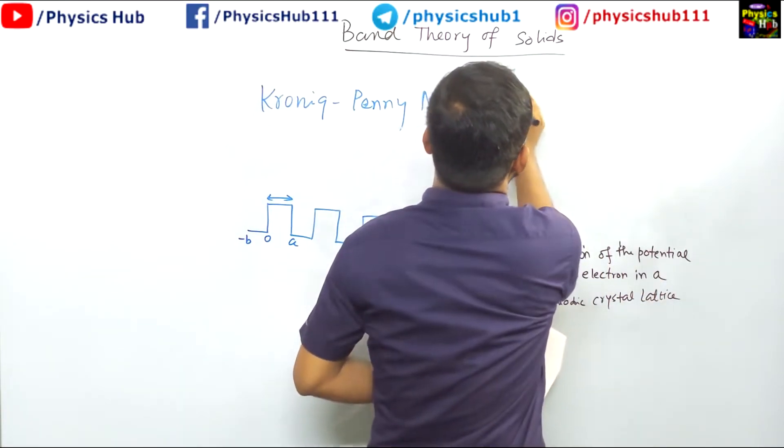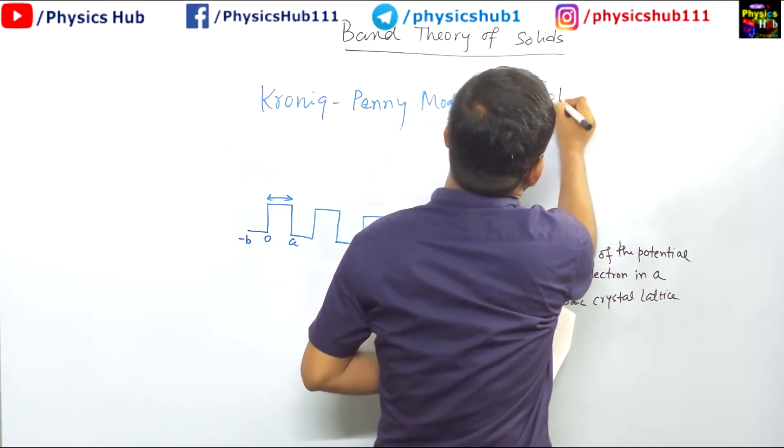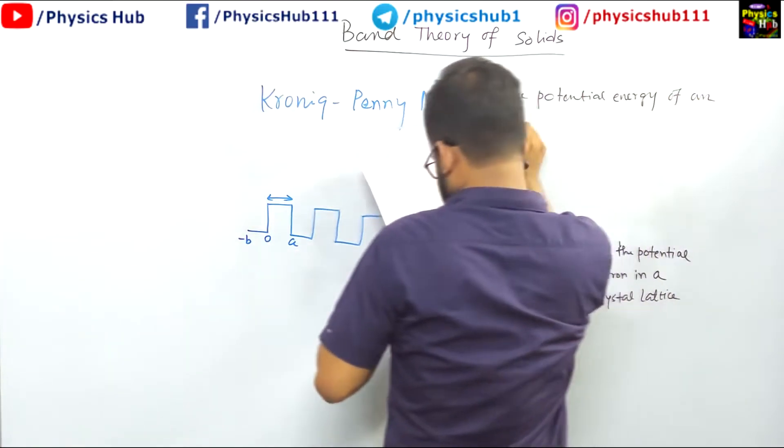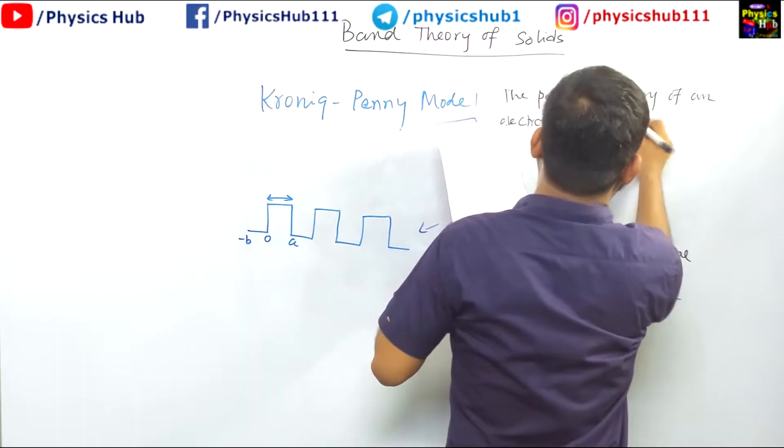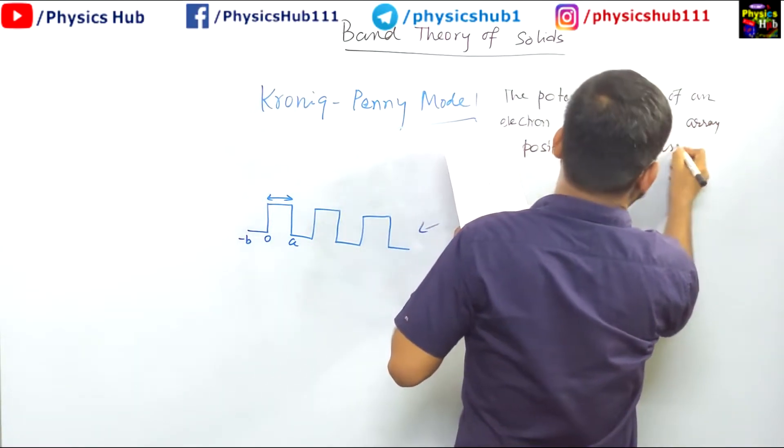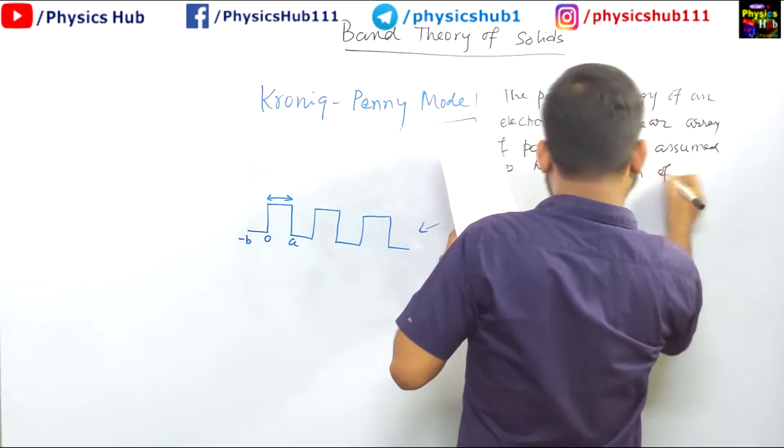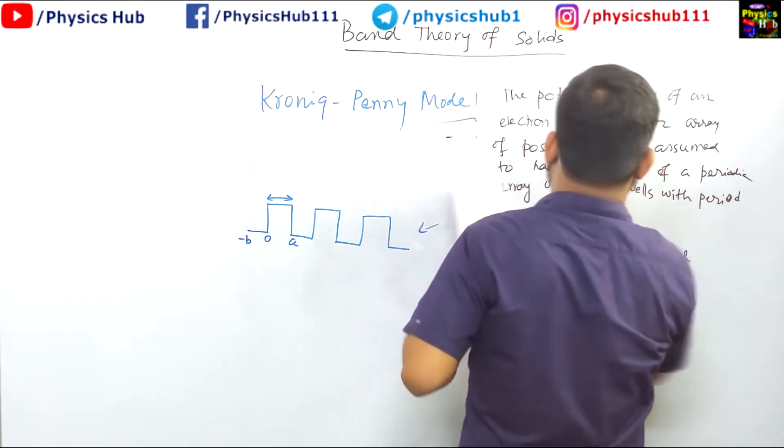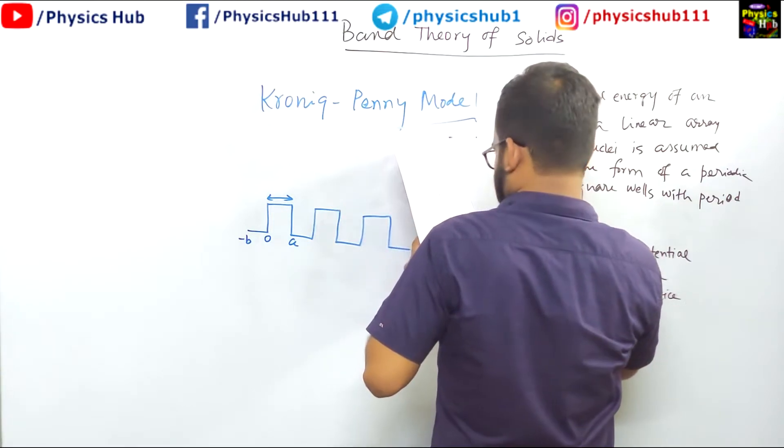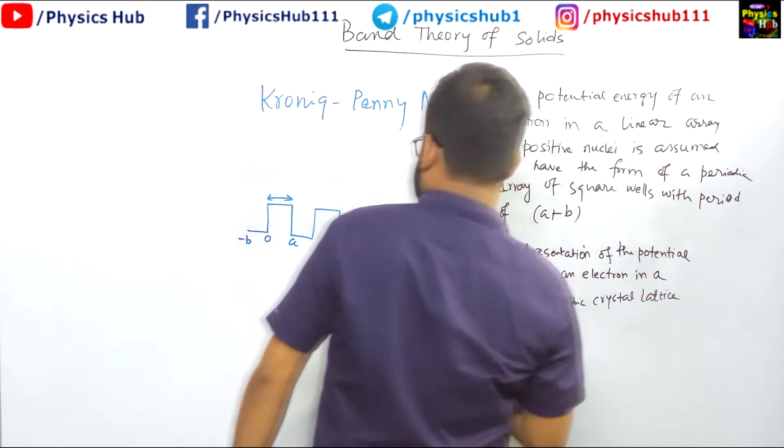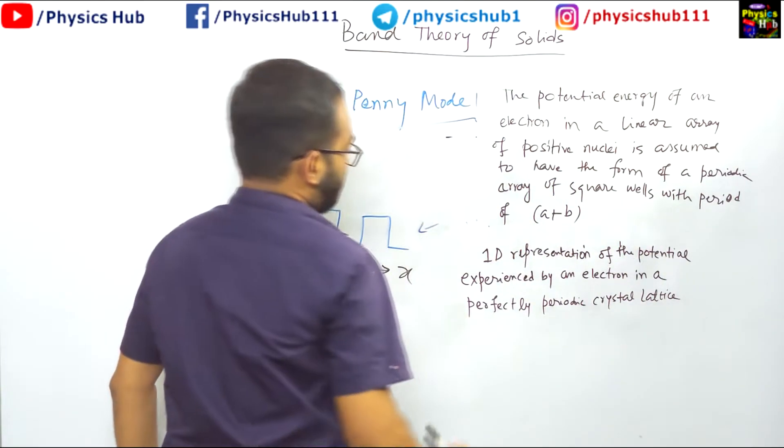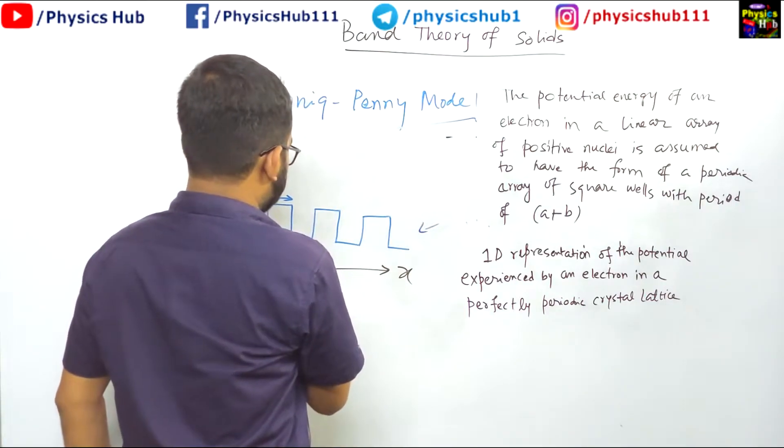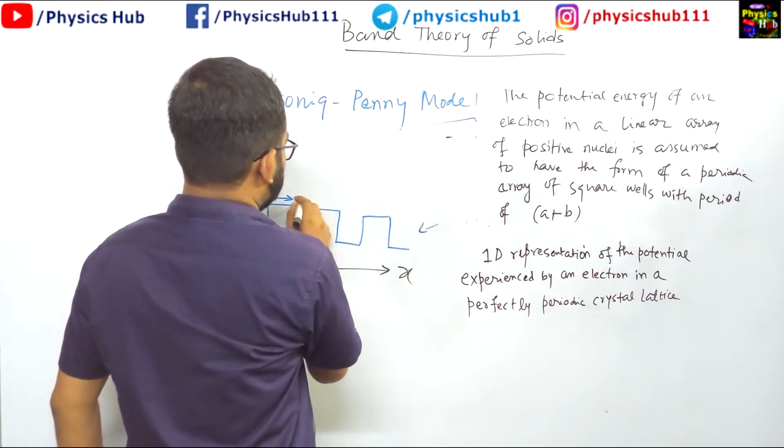The potential energy of an electron, a plus b. This is the potential you have taken, and here you can see the period is a plus b.